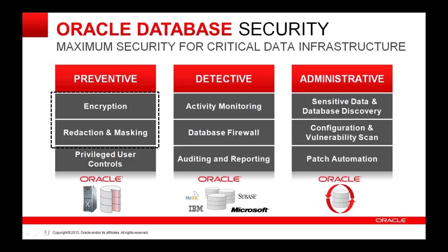The strategy consists of three main pillars: preventive controls, detective controls, and administrative controls. This strategy provides strong controls for Oracle databases, and in specific areas it extends to non-Oracle databases and other related use cases. Oracle Advanced Security is in the preventive area, providing core data at rest encryption and on-the-fly redaction features to help protect the Oracle database. It is complementary to all security controls shown here and can be deployed in tandem with other Oracle database security solutions.